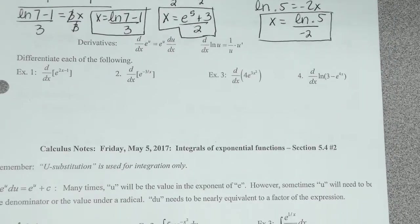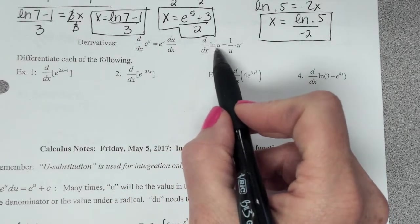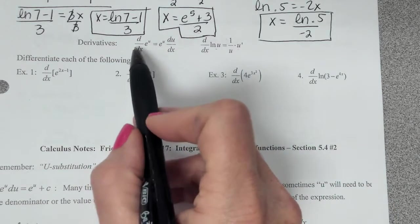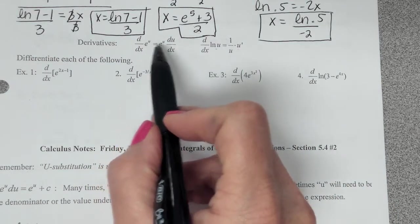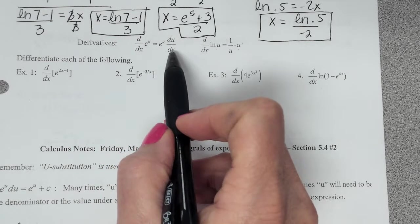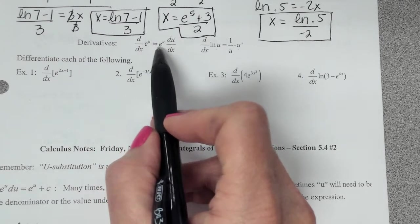All right. Let's review some derivatives. This is a review. We've already done the derivative of natural log of u is 1 over u times the derivative of u. This is new, though. The derivative of e to the u is e to the u times the derivative of u. It's about as easy as it gets because the derivative of e to the something is still e to the something, just times whatever the derivative of that exponent is.